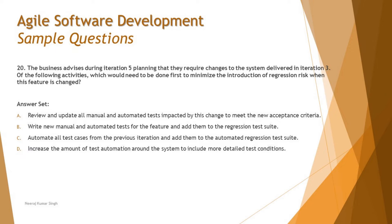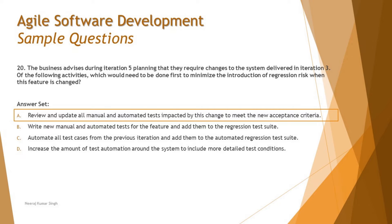Option D says: increase the amount of test automation around the system to include more detailed test conditions. This is contradicting, similar to option B — without reviewing first, you can't just go and create things. You have to analyze first, then create, then execute. Creation is not the first step. Therefore, the right answer for question 20 is A: review and update all manual and automated tests impacted by the change to meet the new acceptance criteria.